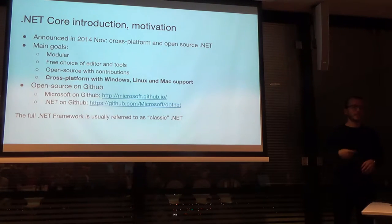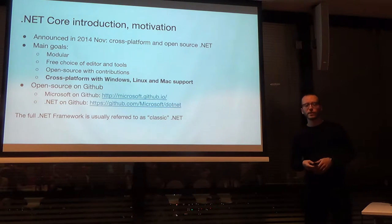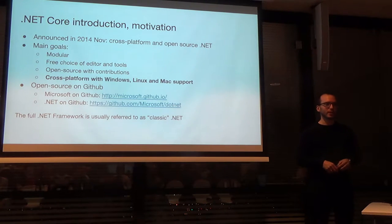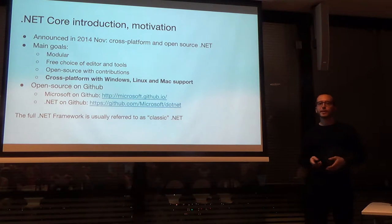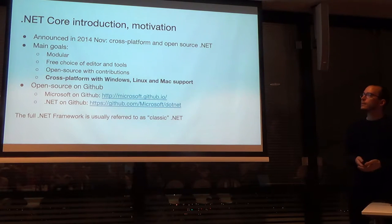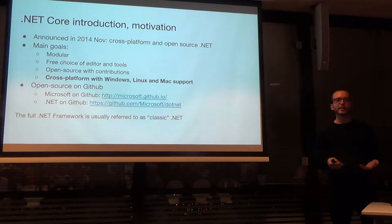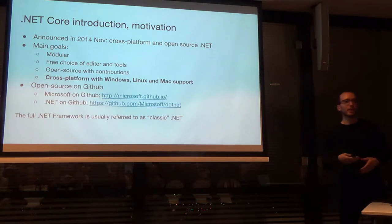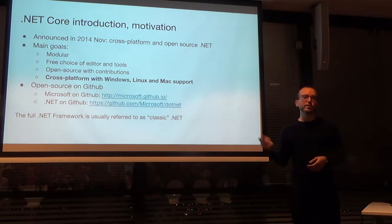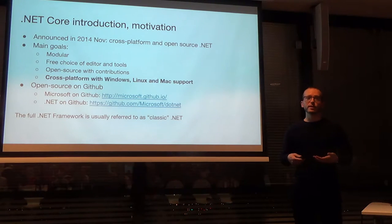The second point is that .NET Core allows a much more free choice in terms of editors and tools. In the classic .NET world, if you want to do serious development in C# and .NET, your only real option is Visual Studio on Windows. Microsoft wanted to change that. The third point is that it is an open source project with outside contributions — classically .NET was proprietary, and they never accepted outside contributions. But the development of .NET Core is now really happening on GitHub, making it a truly open source project.